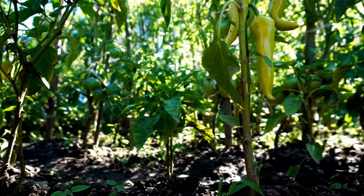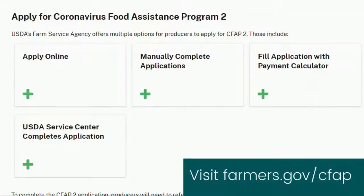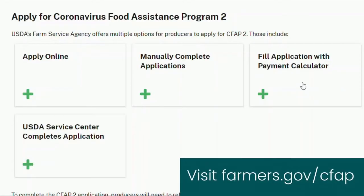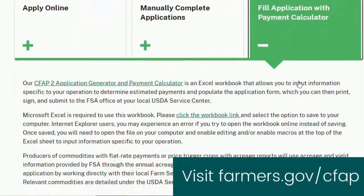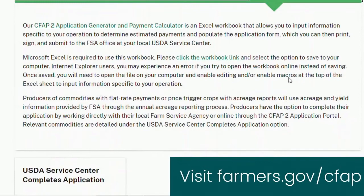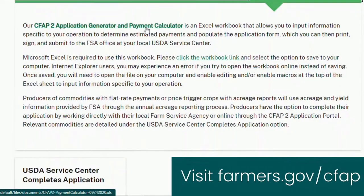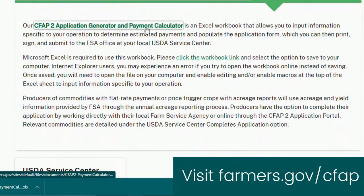We encourage you to go to USDA's CFAP II website to download their payment calculator. The calculator is the best way for farmers to determine exactly how much they would receive for various eligible commodities.